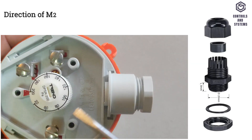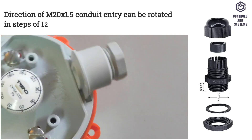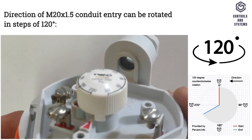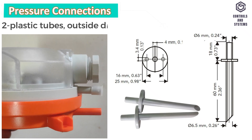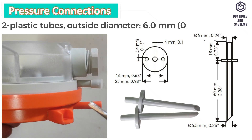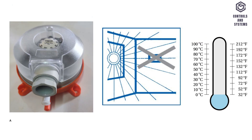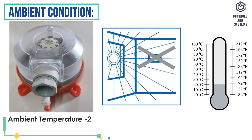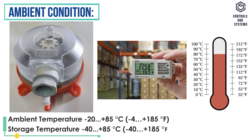The direction of the M20 x 1.5 conduit entry can be rotated in steps of 120 degrees. Pressure connections are 2 plastic tubes with an outside diameter of 6 mm.